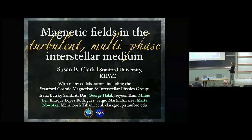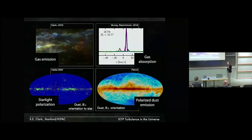That's the ISM, the interstellar medium of our own Milky Way galaxy. I want to start this largely theoretical meeting by talking about some of the really non-trivial observational constraints that we have on this turbulent magnetic interstellar medium. So just to quickly orient us here.